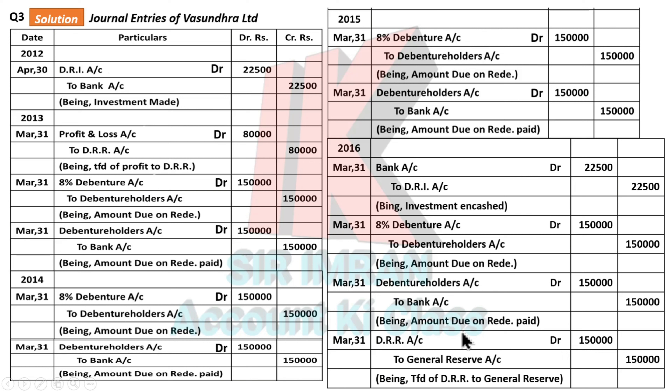This is how the question is completed using the installment method. In installment method, redemption must be done year-wise. In lump sum, you can pass entries directly without the year-wise headache. The key difference: in installment method, DRI is 15% of each installment amount; in lump sum, it's 15% directly on the total figure (Rs. 6 lakhs). Hope there's no doubt — see you in the next video. Thank you for watching. God bless you.